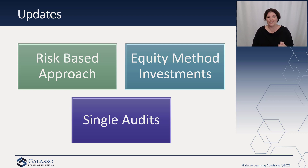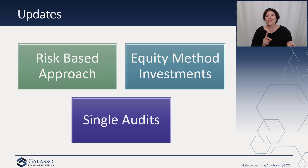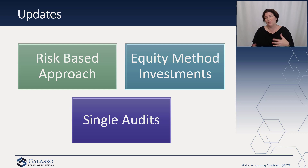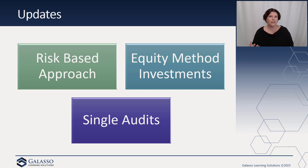SAS 149 identifies the specific procedures the group auditor is required to perform when equity method investments are present. It walks through requirements such as reading the financial statements and evaluating timing — are the fiscal years the same, are the periods the same, is the GAAP the same? This series of questions is designed to identify matters that cause the group auditor to conclude what additional procedures, if any, need to be performed on the investment. There could be consistency differences or other issues requiring additional procedures.